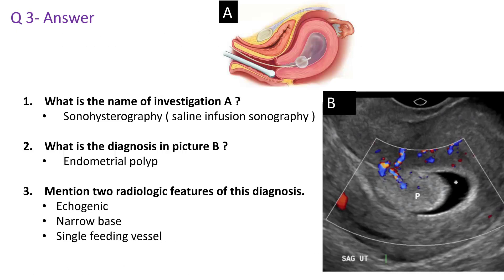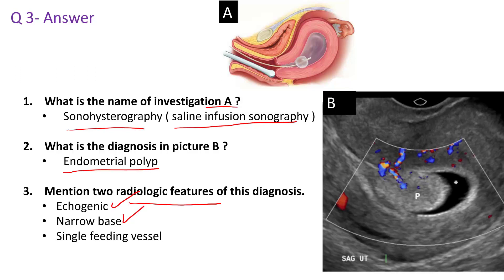The answer to question 3: the name of investigation A is sonohysterography or saline infusion sonography. The diagnosis is endometrial polyp, and the radiological features of endometrial polyp are that it is an echogenic mass inside the uterine cavity with a narrow base and a single feeding vessel.